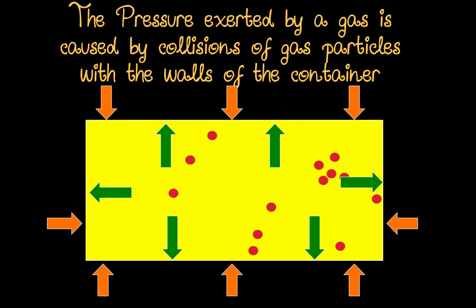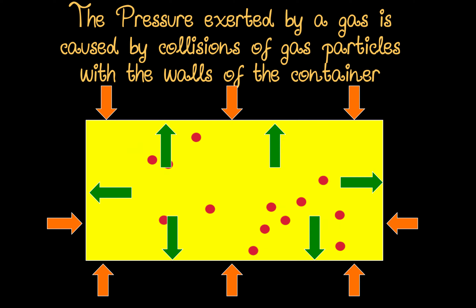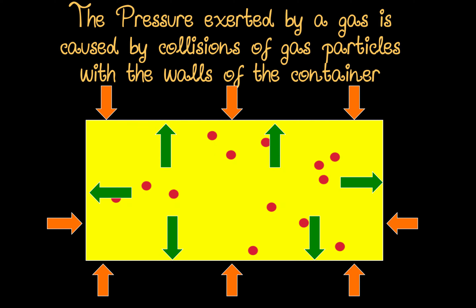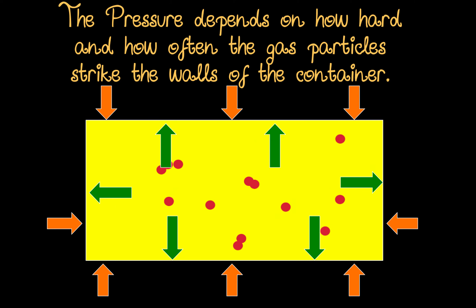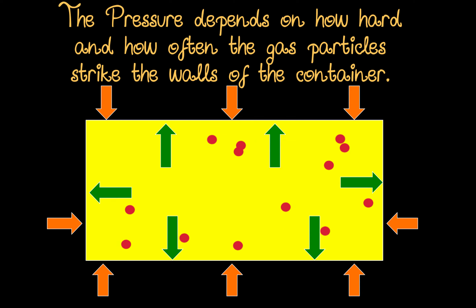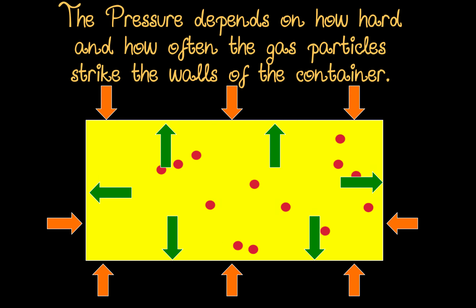Now, the pressure exerted by a gas is caused by collisions of the gas particles with the walls of the container. As the gas particles hit the walls of the container, pressure is exerted. The pressure depends on how hard and how often the gas particles strike the walls of the container. The harder they hit, and the more often they hit, the higher the pressure.